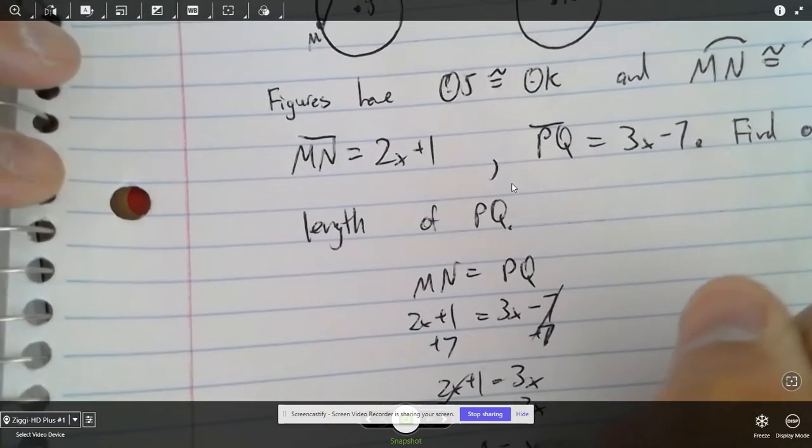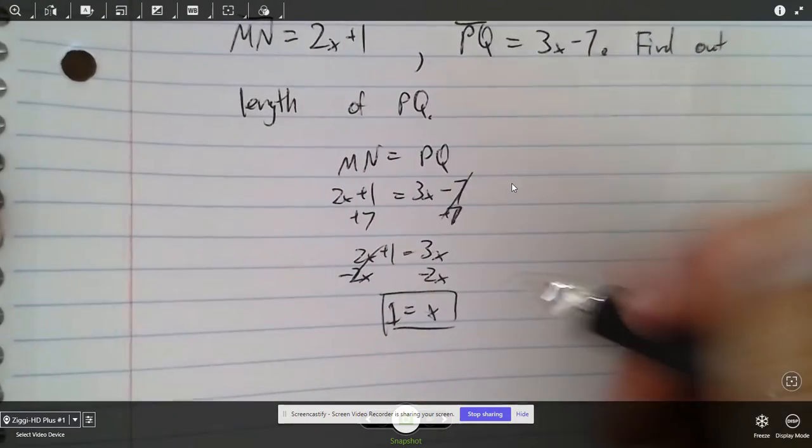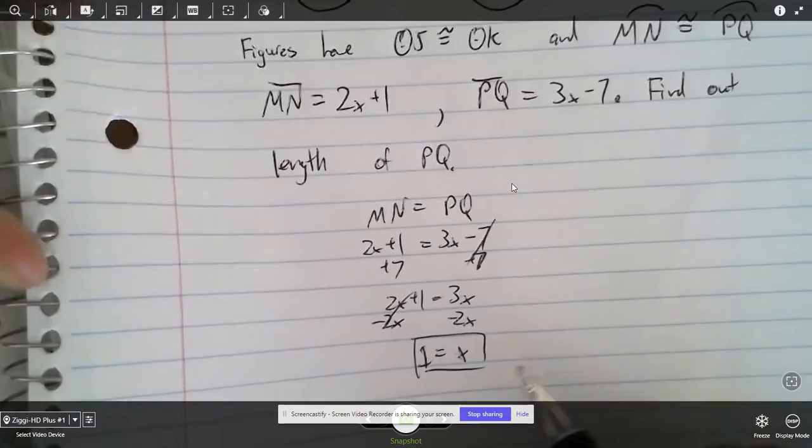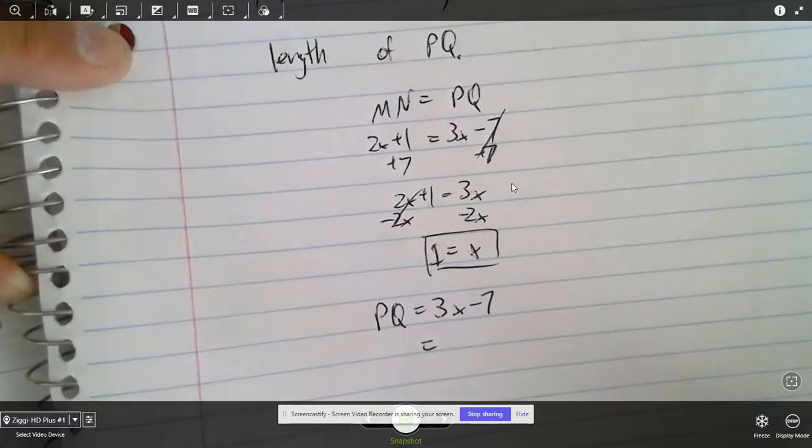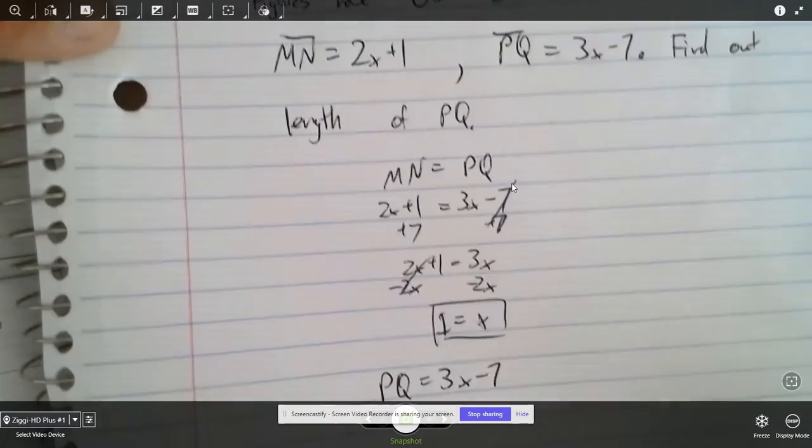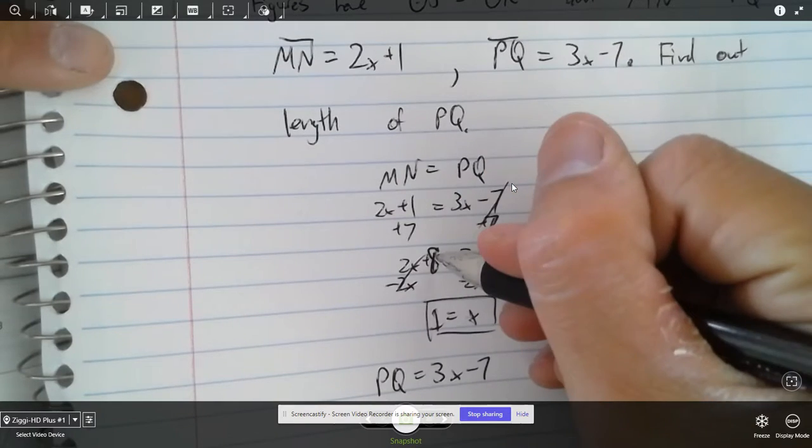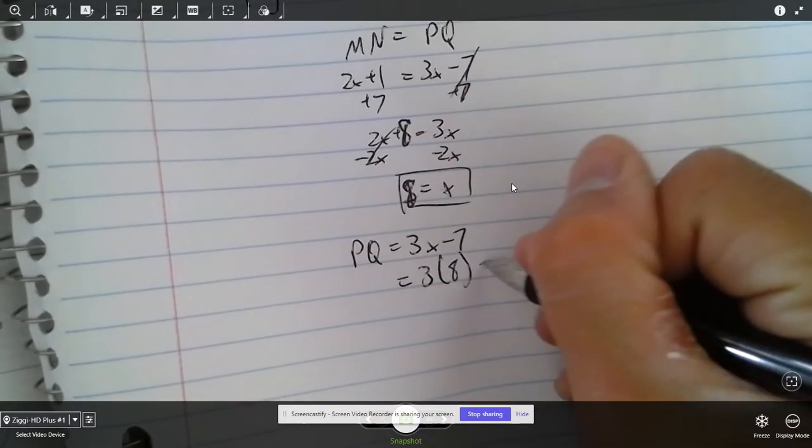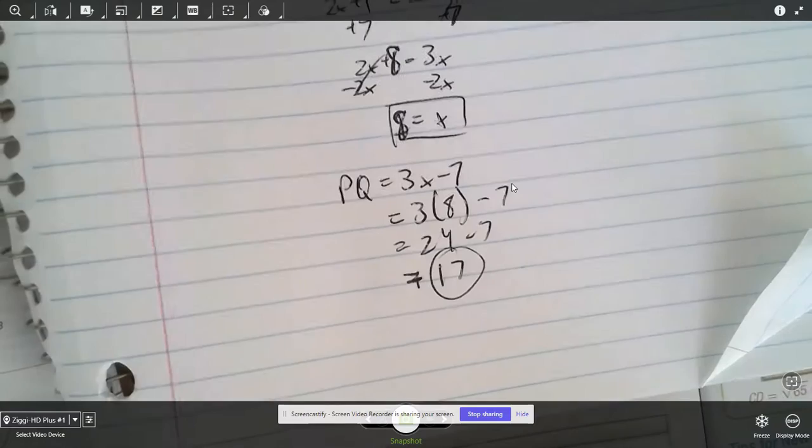And then I should get that X is equal to... wait, let me go back. There's a mistake. 1 and 7 equals 8. So 8 is equal to X. So let's do 3 times 8 minus 7. That should be 24 minus 7. That should give you 17. PQ is equal to 17. That should be your final answer.